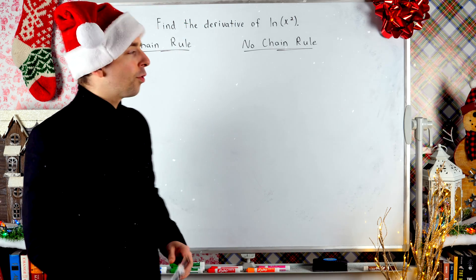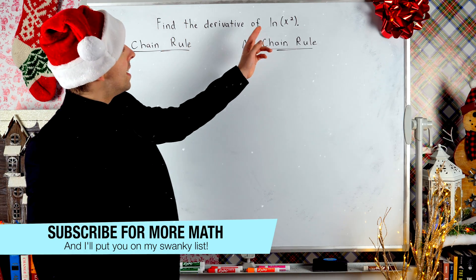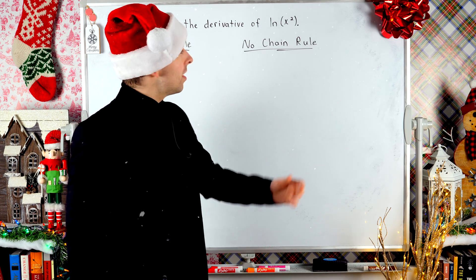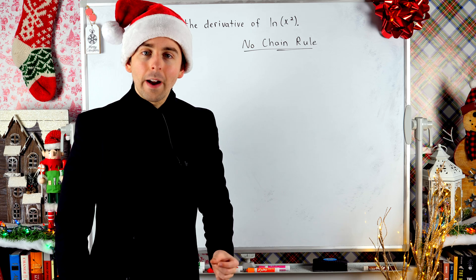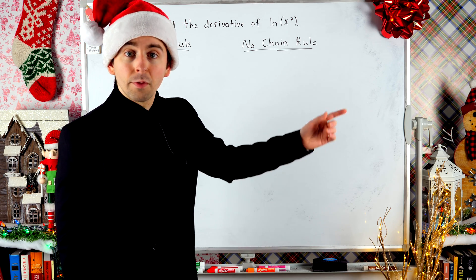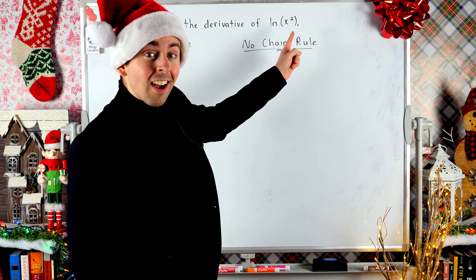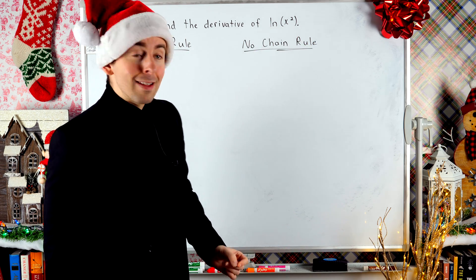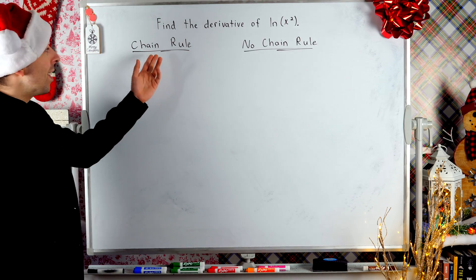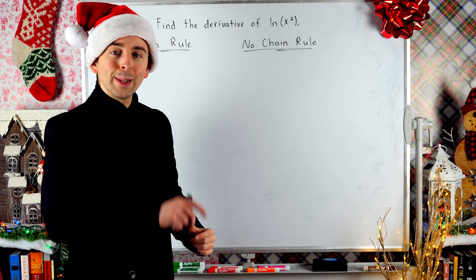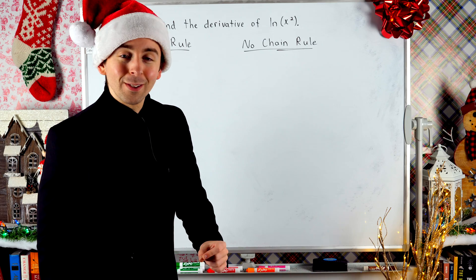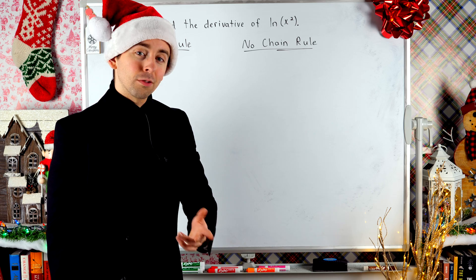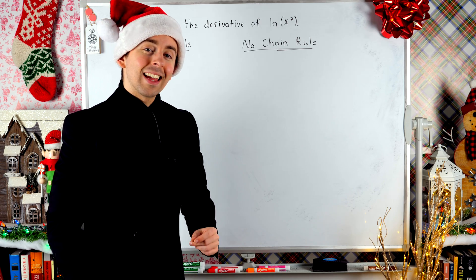Season's greetings. Let's find the derivative of the natural log of x squared. When you see the natural log of x squared, you might notice that's a function, x squared, inside of a function, the natural log function. You may think to take this derivative with the chain rule, and we will do that. But we'll also do it without the chain rule — two ways we can do this fun little derivative, so let's get into it.